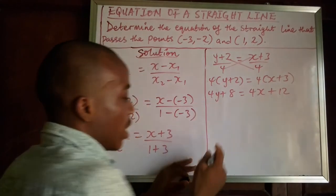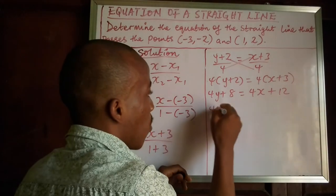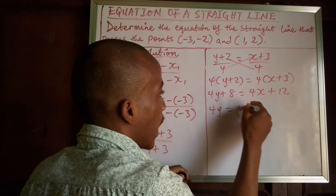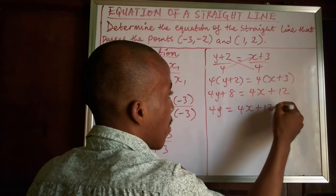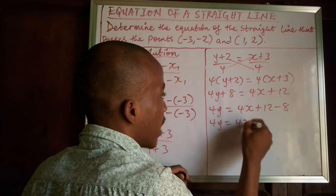So then we have it as, if we put it in coordinate plane form, we have it as 4y will be equal to 4x + 12 - 8. This will go the other way. So 4y will be equal to 4x plus, 12 minus 8 is 4.